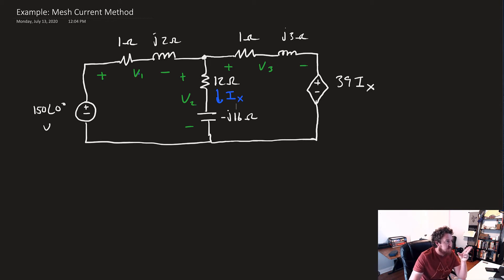And we've been asked to find the phasers for V1, V2, and V3, given here in green. The only weird thing is that we have a dependent voltage source hanging out here, and that's going to be this guy in blue, IX, that's extending down through this 12-ohm resistor, through this minus j16-ohm capacitor.